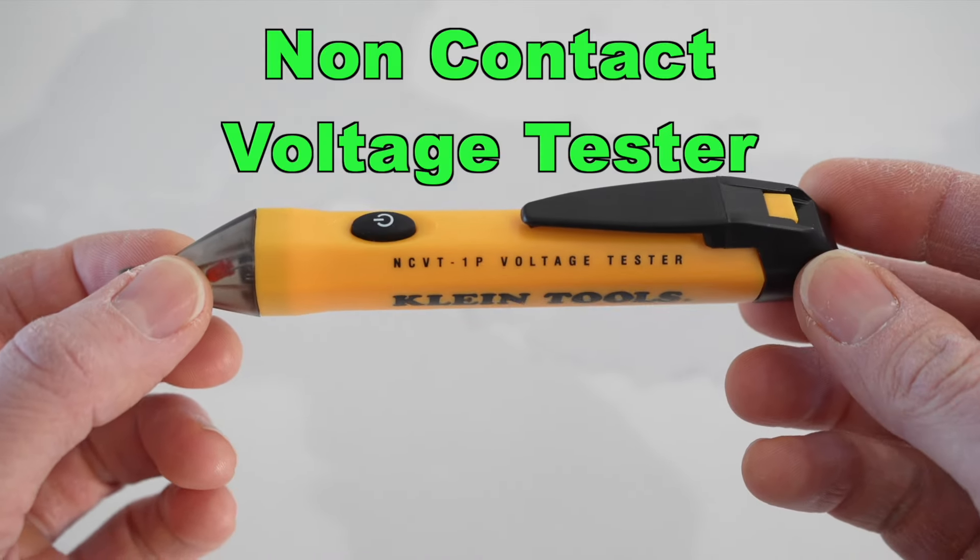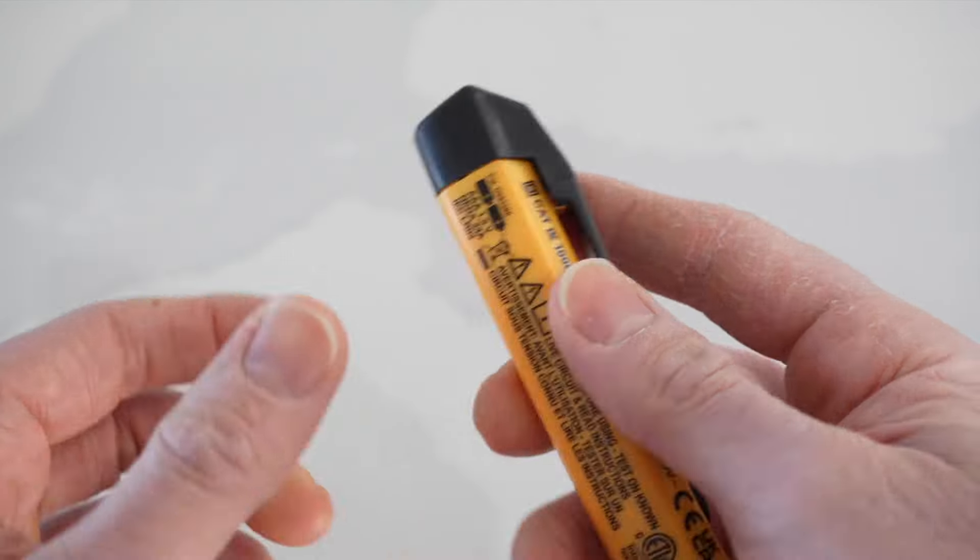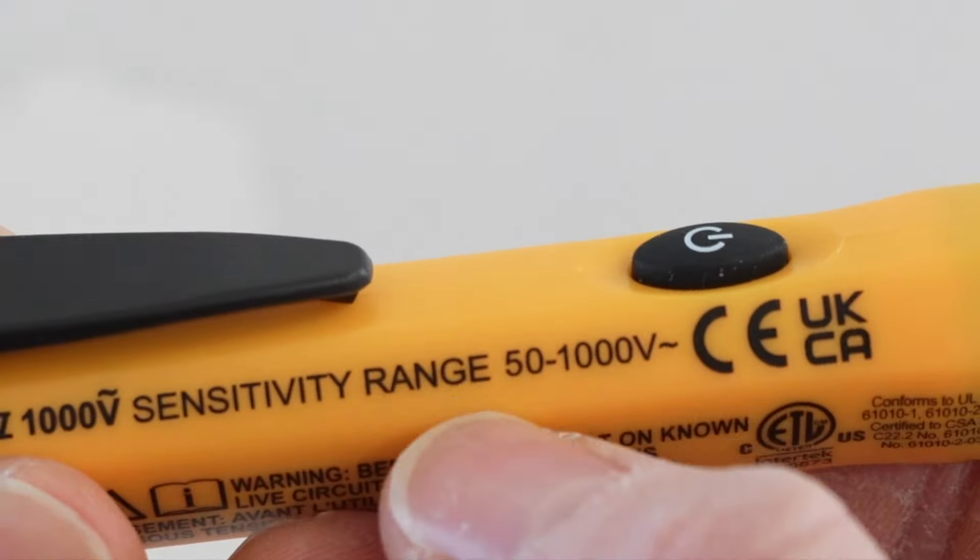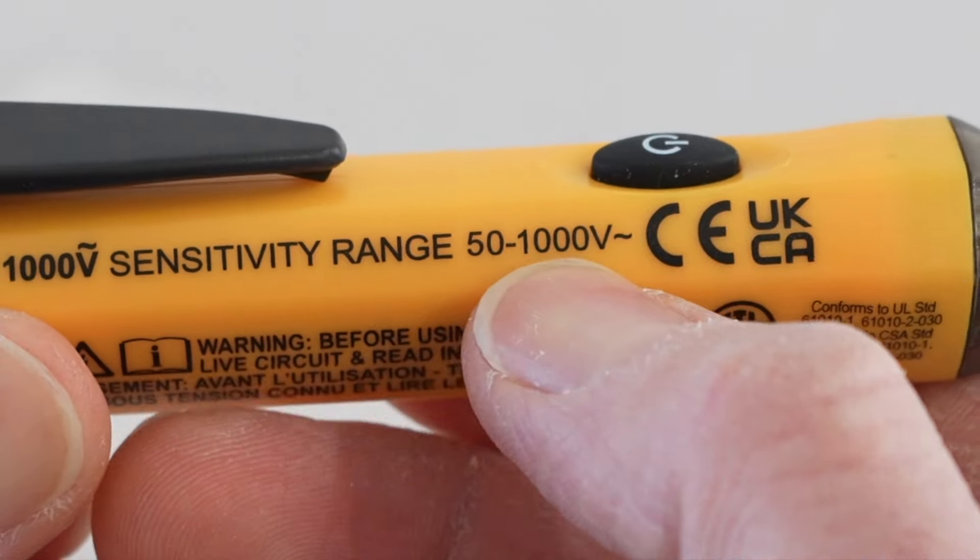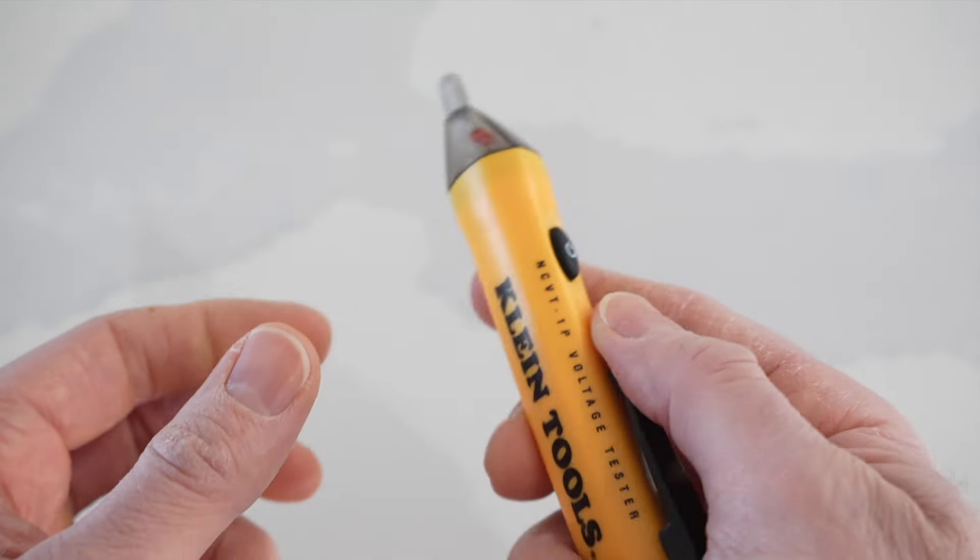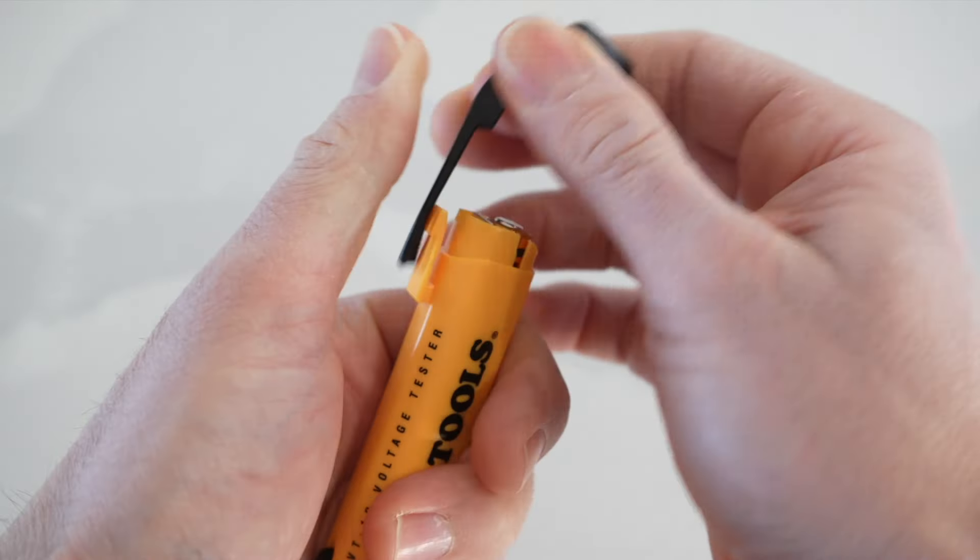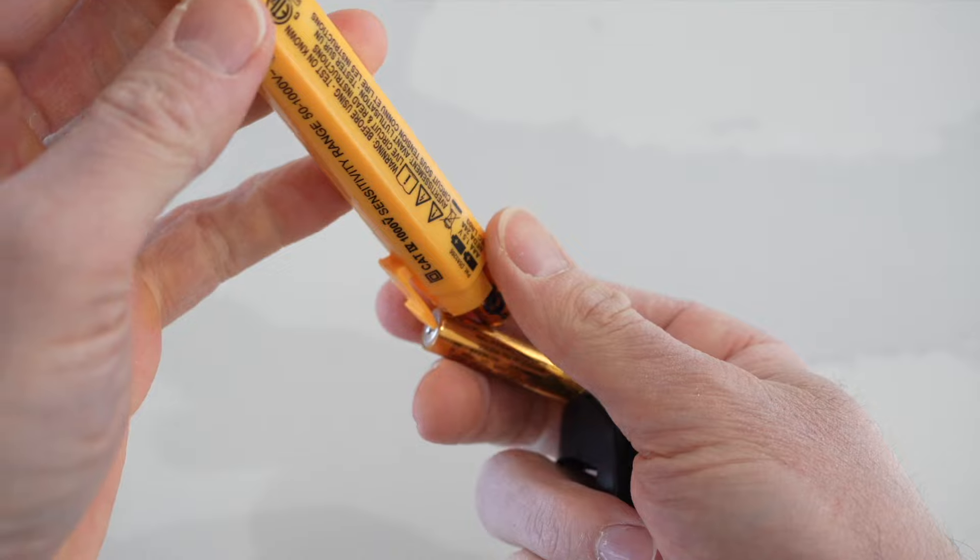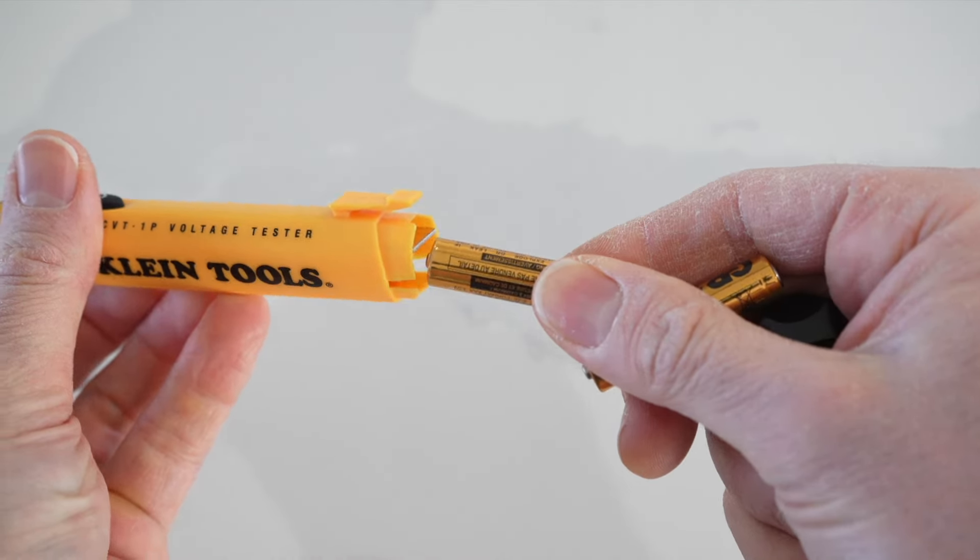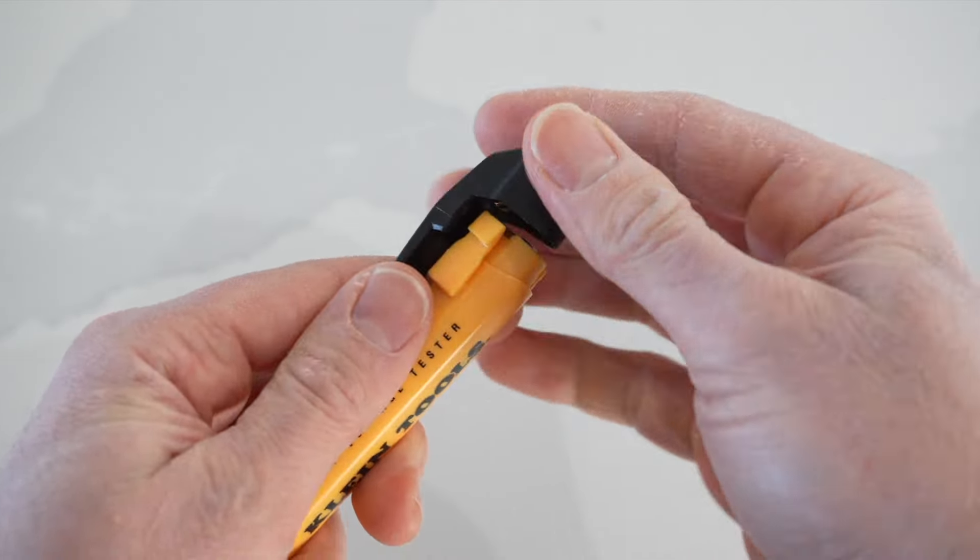The first tool that I'd like to go over is this non-contact voltage tester made by Klein. If we take a look at the back, it's good from 50 to 1,000 volts, and it only detects AC current and not DC current. So AC current is what runs through your house. If we pop this back off, this is where the batteries are stored. It requires two AAAs in order to power the device, and it came with the batteries.